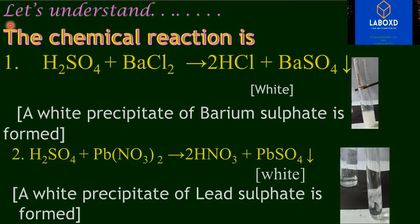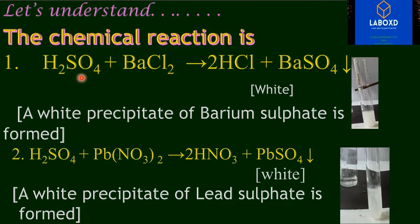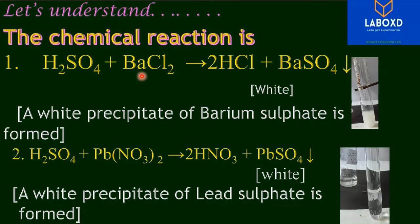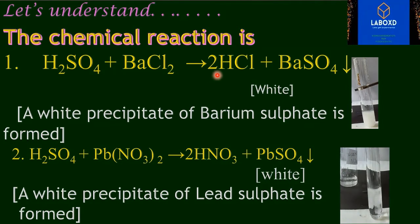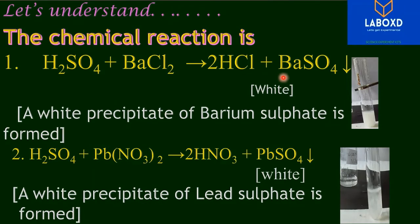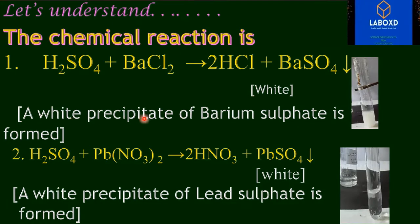Now let us understand the chemical reactions taking place in this experiment. H₂SO₄ (sulfuric acid) reacts with BaCl₂ (barium chloride) to form HCl (hydrochloric acid) and BaSO₄ (barium sulfate). A white precipitate of barium sulfate is formed.